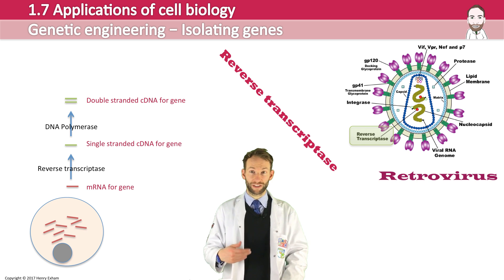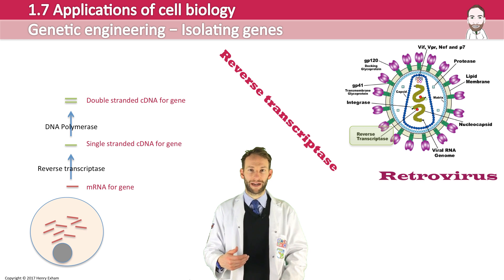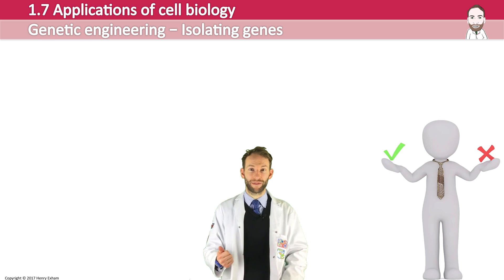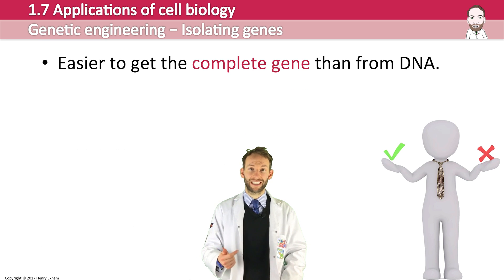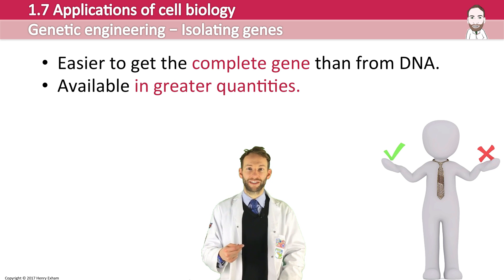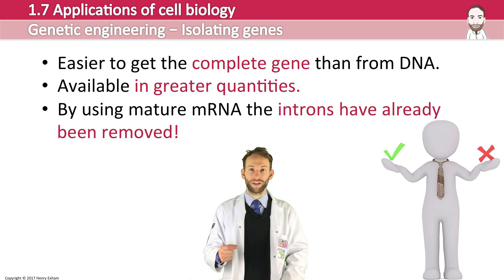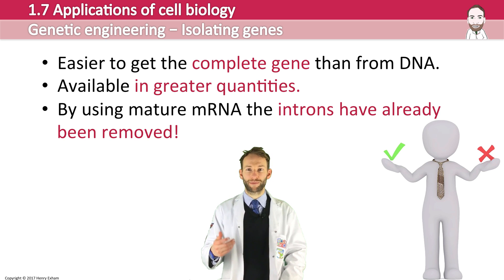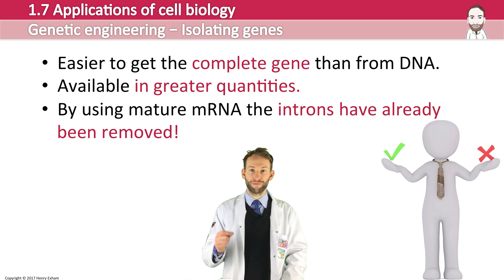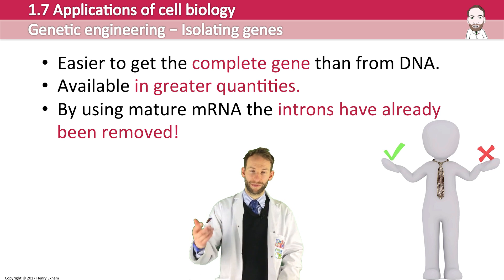There are some advantages of using reverse transcriptase and mRNA over restriction endonucleases. First, it's easier to get the complete gene from the DNA. Second, the messenger RNA is available in greater quantities. Third, prokaryotic cells cannot remove introns from a gene. In genetic engineering, bacterial host cells are often used, so if you insert DNA, introns must be removed first, which is very difficult. But if we use mature messenger RNA and work backwards, the introns have already been removed, so that problem is eliminated.